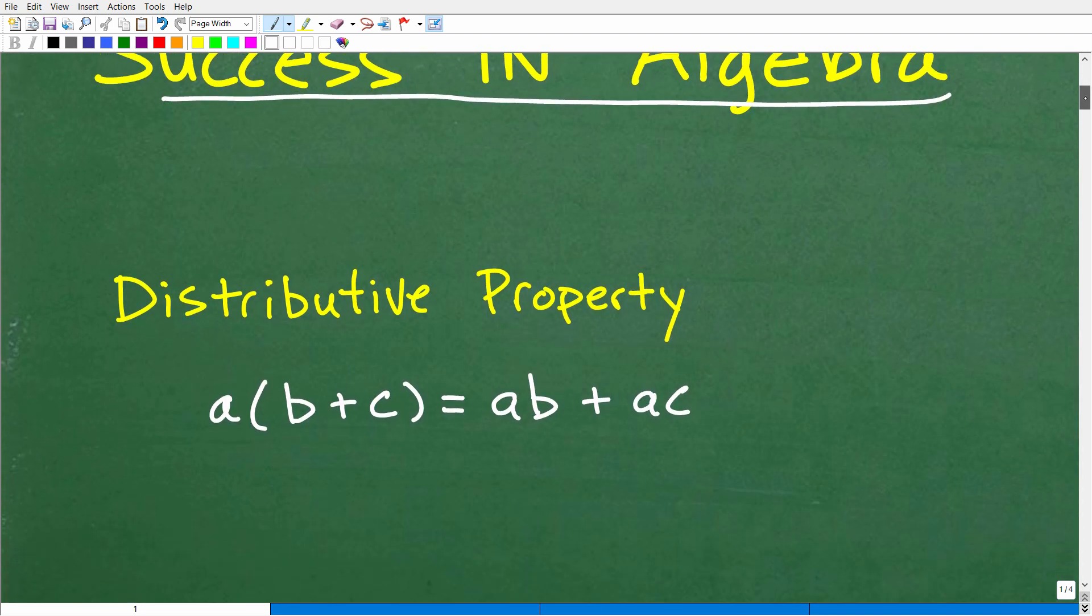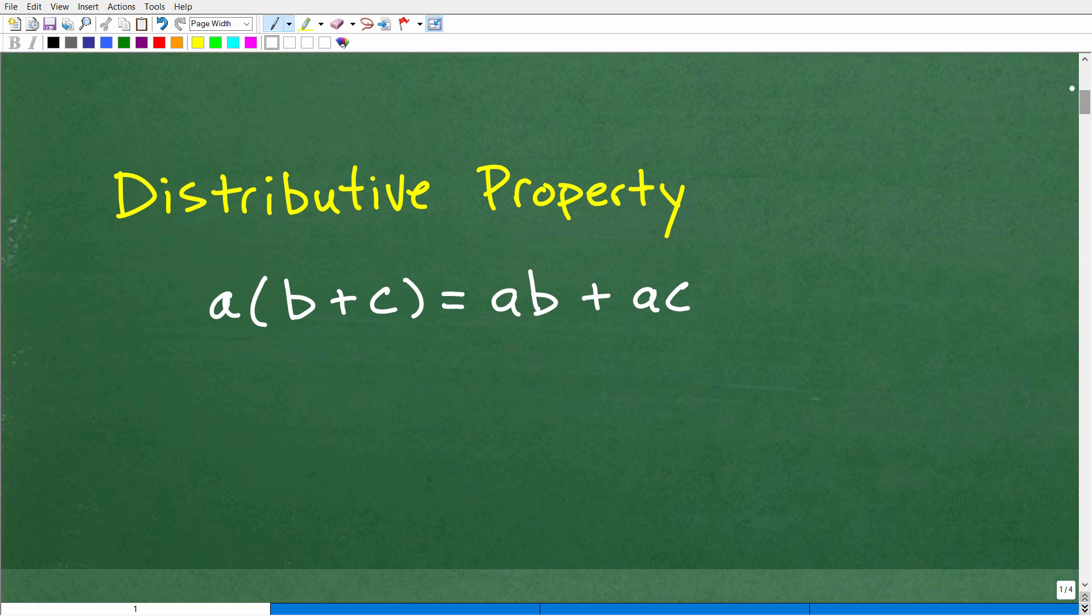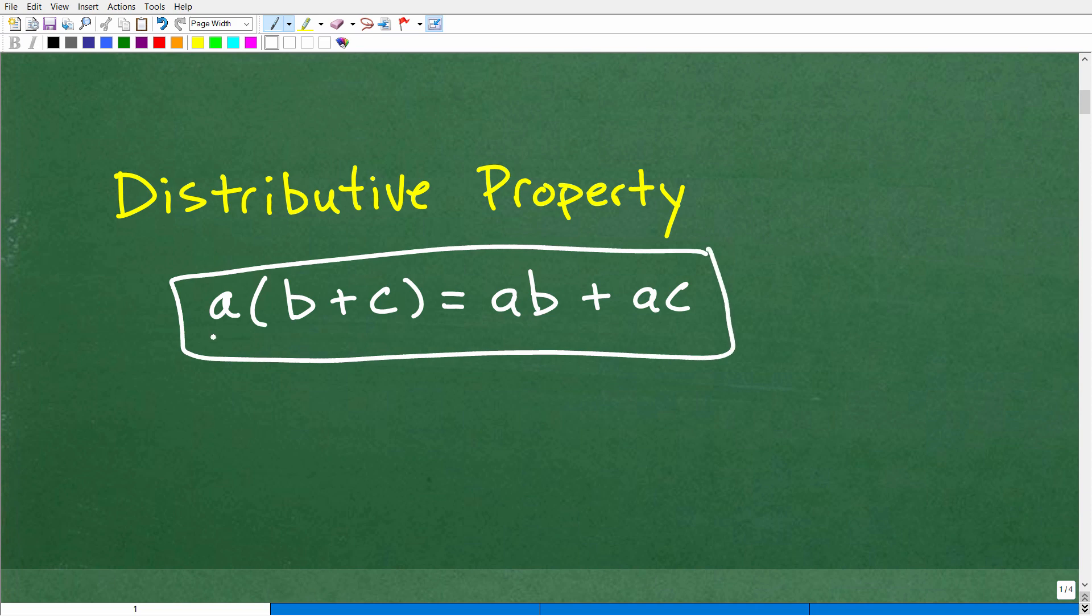All right, so let's get into the distributive property. And of course, this is how you would see it. So when you're taking your notes in your algebra class, you'd be given something like this: a times parentheses b plus c closed parentheses equals ab plus ac. So that's typically the way you'll see it. This is the distributive property.